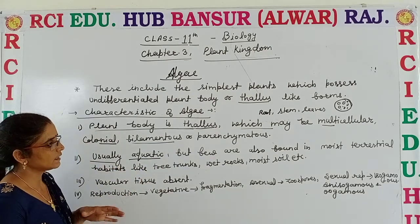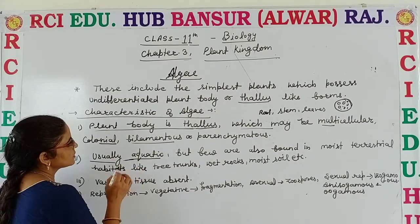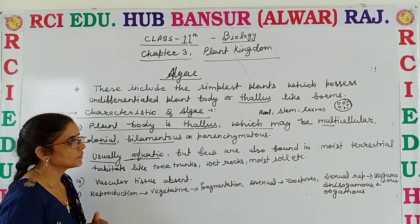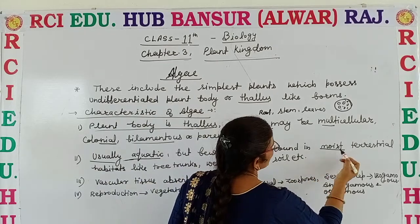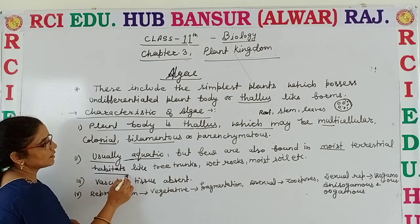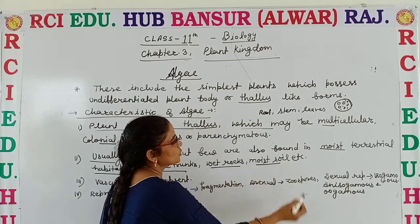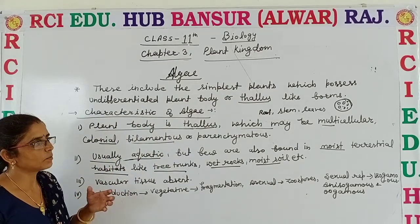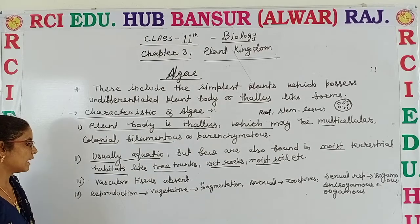The second characteristic is that algae are usually aquatic. Mostly algae live and survive in water. But some of them are found in moist places — where moisture is present in terrestrial habitats — like tree trunks, wet rocks and moist soil. So apart from water, they are also present in places where moisture is available in large amounts.